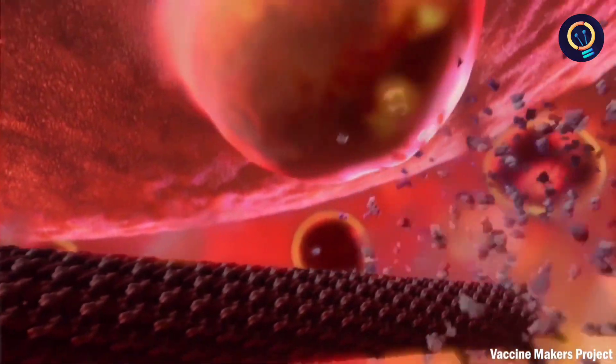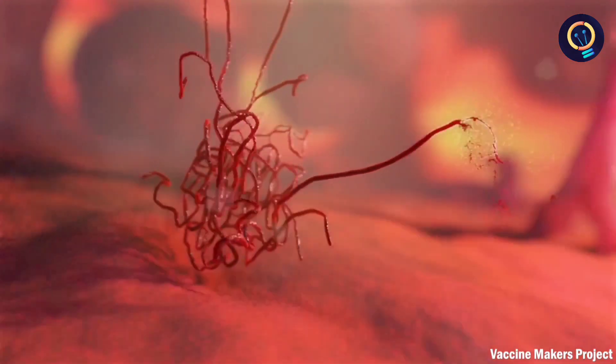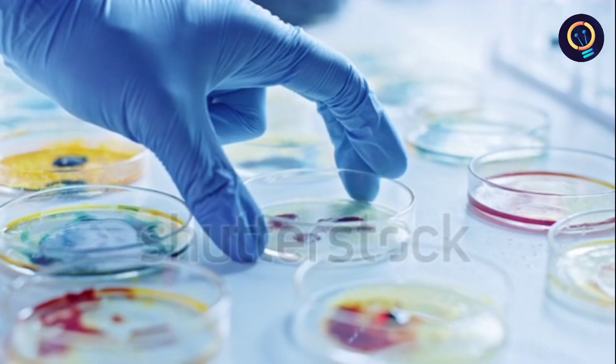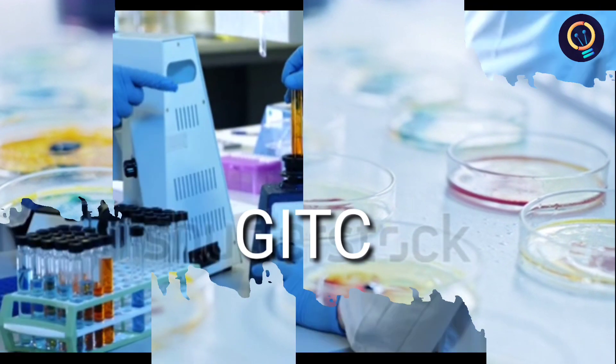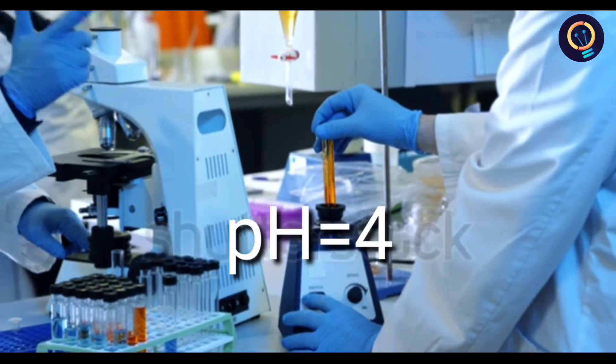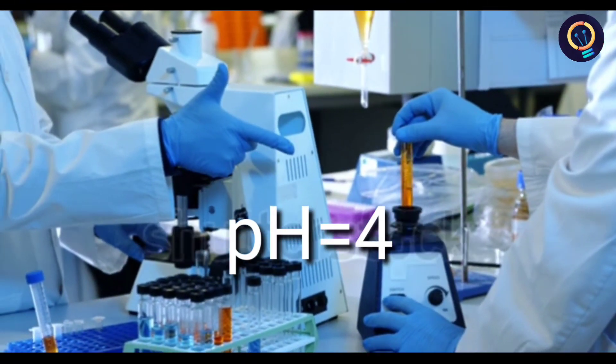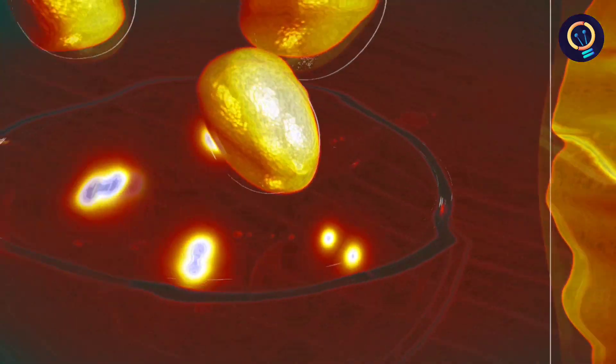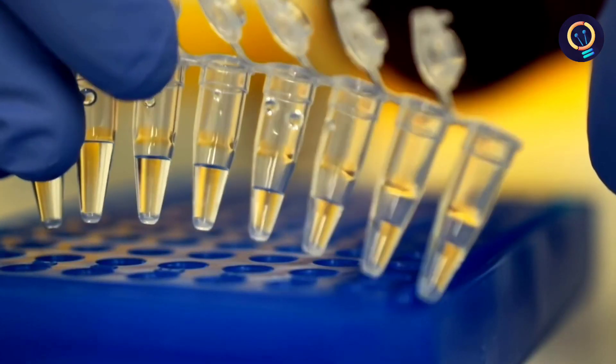RNA being highly unstable gets degraded easily and to stop this degradation a compound named GITC is used. If the pH of the solution is 4, in simple non-scientific terms it means that if the solution is as acidic as a lemon then the RNA floats at the top of the solution and ultimately after processing it you can use it for vaccine.